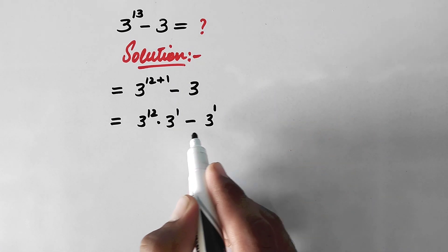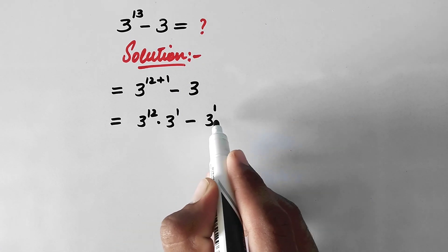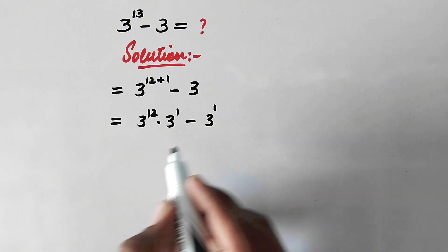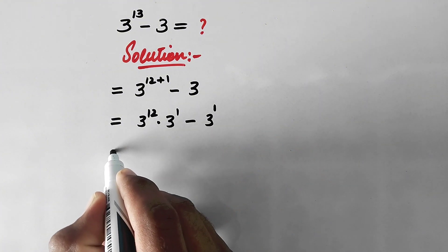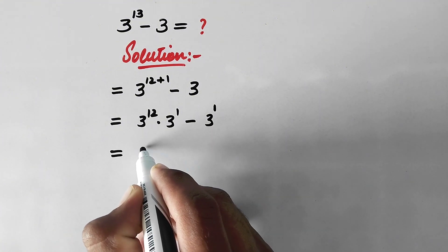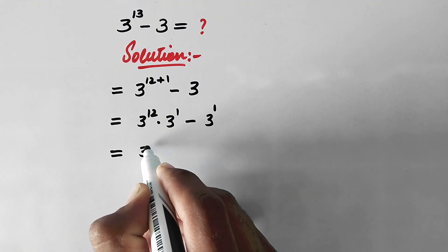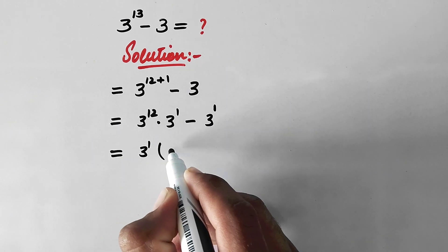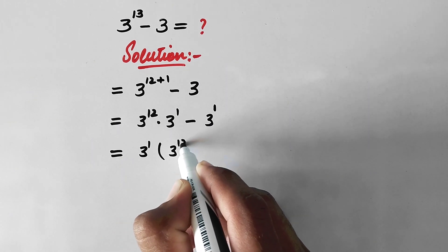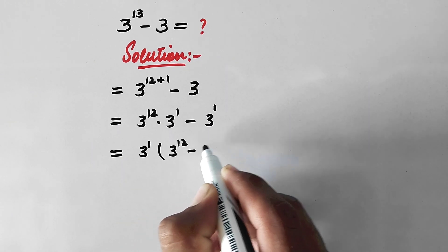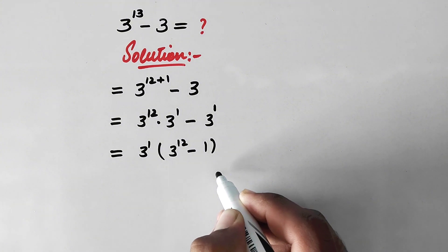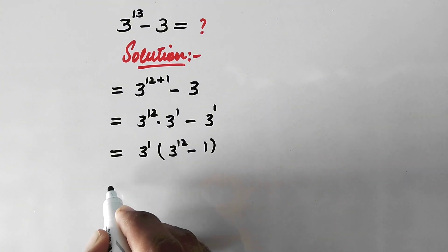Now we can see that 3 to the power 1 is common in both terms, so we take it out as a common factor. Therefore we get 3 to the power 1, times the quantity 3 to the power 12 minus 1.